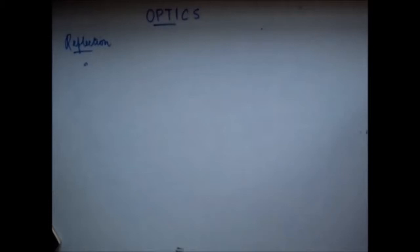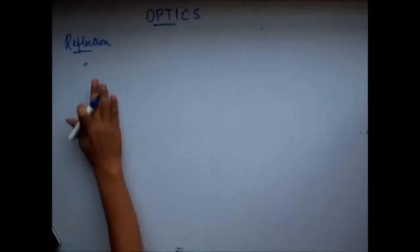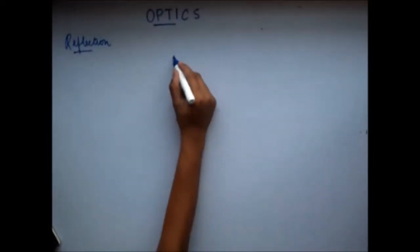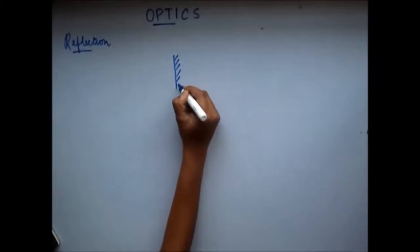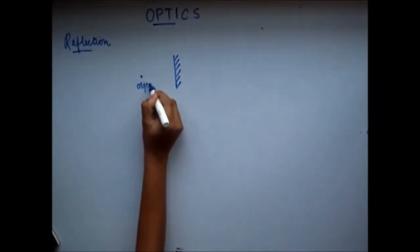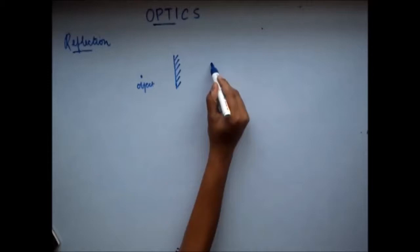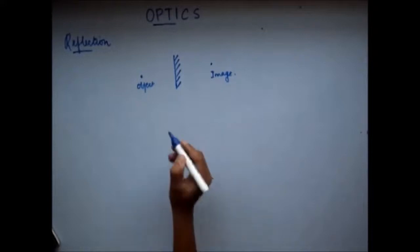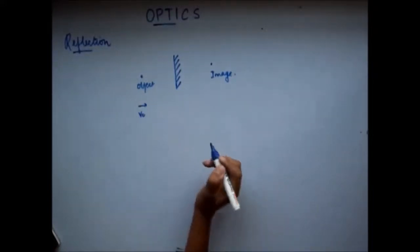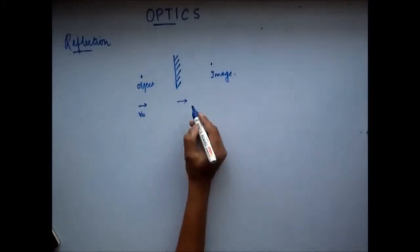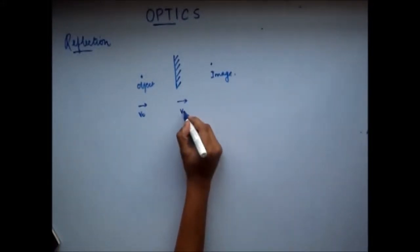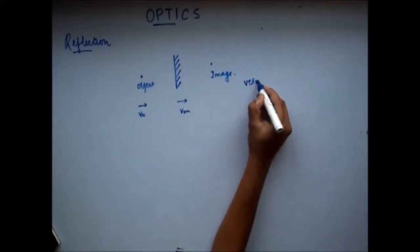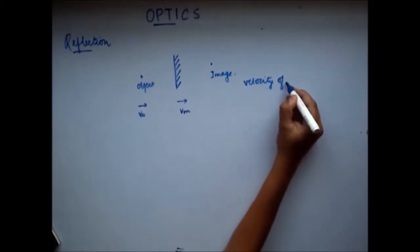Let's take the first example. There is a mirror and an object, and since there is a mirror, there is an image. The object starts moving with a velocity v0, and the mirror starts moving with a velocity vm. The question is: what is the velocity of the image?